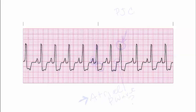Now we have to look at the rest of the strip. We've determined that this is a PJC because there is no P wave. Remember, PJCs will either be flat and then go into the QRS, or inverted and then go into the QRS. In this case it's flat. This is a premature junctional contraction because we don't have the P wave to call it an atrial contraction. And the QRS is still narrow — that's how we know it's junctional and not ventricular, because the QRS looks identical to everything else.